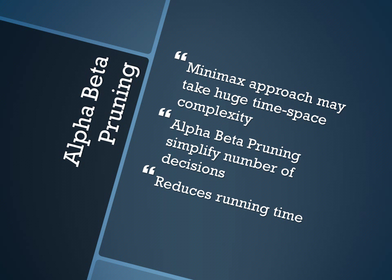As you can see, if the game we're trying to simulate through minimax has a lot of options — say, for example, chess — this approach could take huge time and space complexity, because the branching factor would be very high, and it would be very slow. Alpha-beta pruning would simplify the number of decisions and the number of nodes that you would look at, which would reduce the running time.